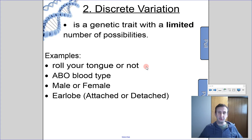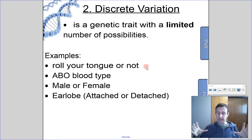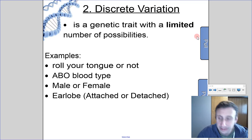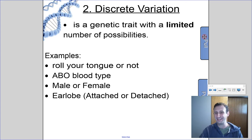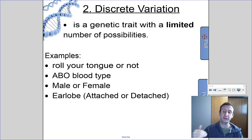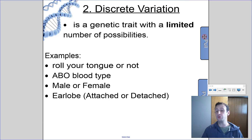Discrete variation, to contrast that, is where you have limited possibilities for a trait. It's not a spectrum but kind of like yes or no, or a mixed set of determined options. For example, tongue rolling is a discrete trait in that you can either roll your tongue or you cannot — this is something we'll deal with in the genetics lab later. Try it right now: can you roll your tongue? If you can, you have the tongue rolling gene, which is a dominant gene. If you cannot, then you do not have the gene for tongue rolling. This has a limited range of possibilities — you're either a roller or you are not.